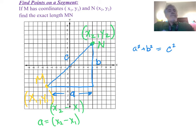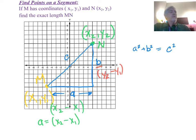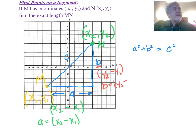My B here is my vertical length — that's my y component in the vertical. This length here is y2 subtract y1, so B equals y2 minus y1, the difference between my two y coordinates.